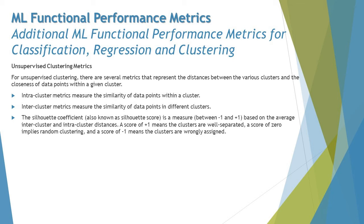The third metric is the Silhouette Coefficient, also known as the Silhouette Score — a measure ranging from minus one to plus one based on the average inter-cluster and intra-cluster distance. A score of plus one means the clusters are well separated, a score of zero implies random clustering, and a score of minus one means the clusters are wrongly assigned. The end goal is to get as close as possible to plus one; the closer to negative, the worse the clustering.